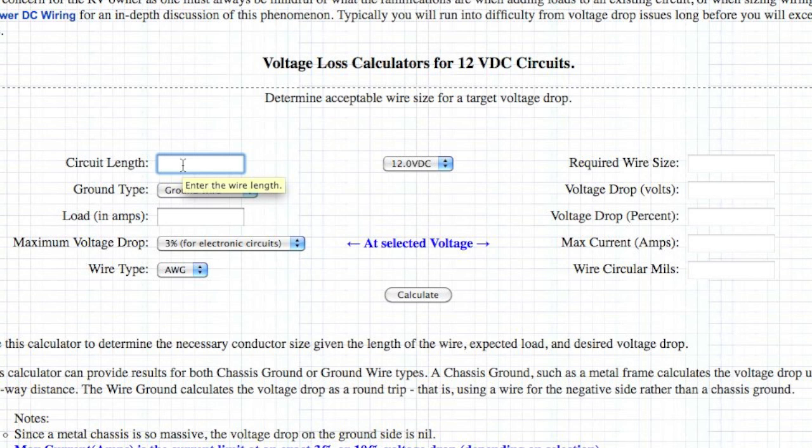So we want to enter the wiring distance of 15 feet, and we have either the option of a ground wire or a chassis ground. Ground wire is appropriate in this situation because in a fiberglass boat, there is no chassis ground, so we have both a supply wire and a return wire. If we were in a vehicle, we could use chassis ground, and of course in an RV, you could have either.